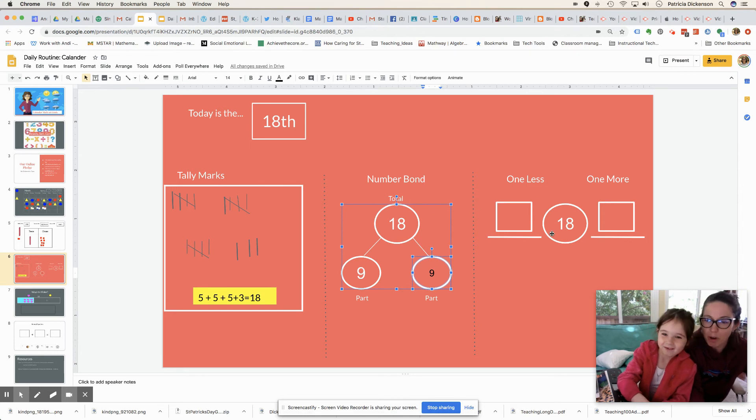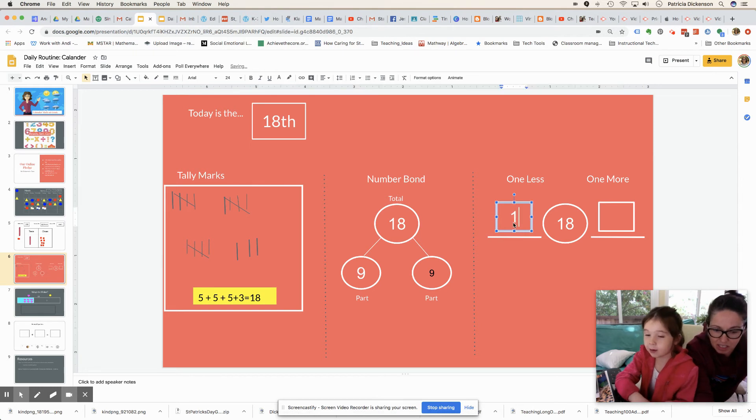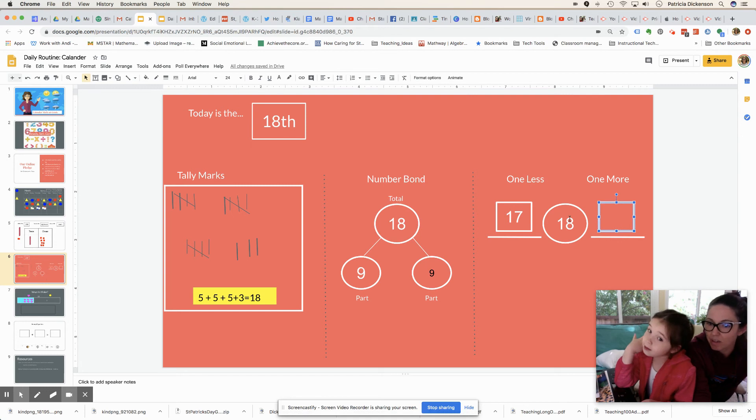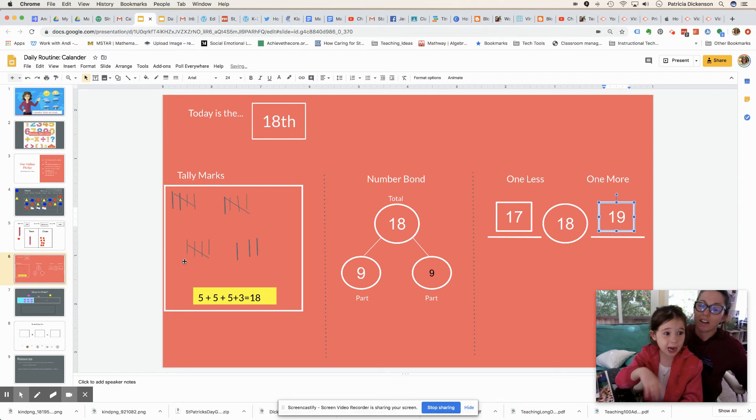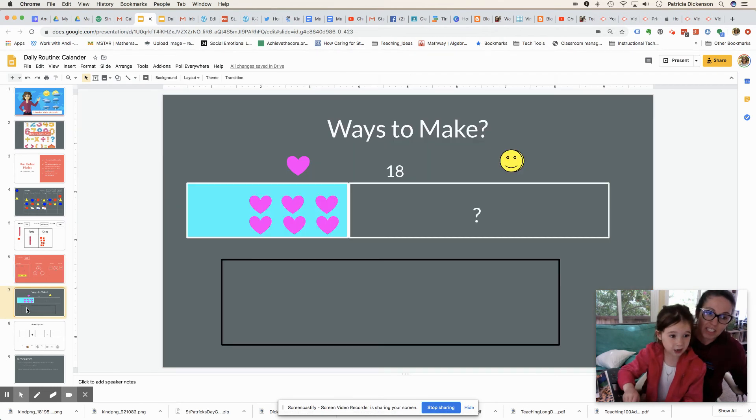Now tell me about what's one less and one more than 18. One less is 17. Uh-huh. We just saw that on the calendar, didn't we? Yeah. And then one more is 19. Very good. Okay. Let's get moving on.